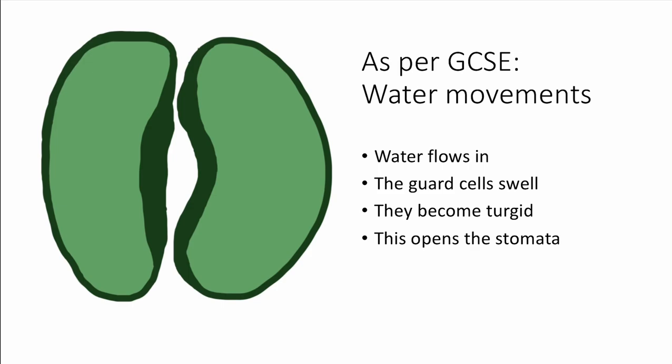From your GCSE days, you should know that somehow water magically flows into those guard cells, they swell, become turgid, and the two flattened inside surfaces buckle outwards magically somehow, the shapes become two crescent moon shapes, and the stomata opens. But how and why?